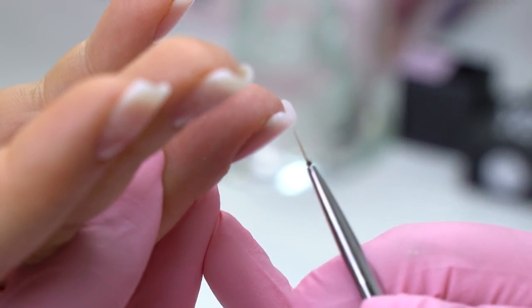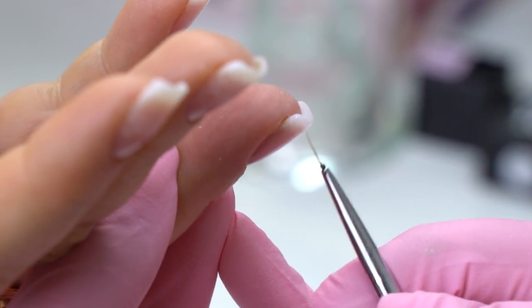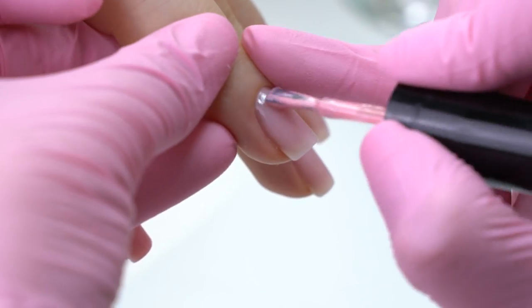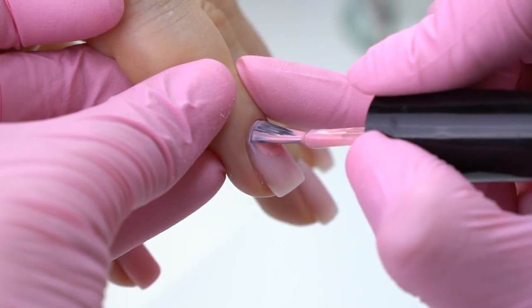Turn the hand over and even out the material, pushing it toward the cuticle. Once it's all even, we can move on to applying color.